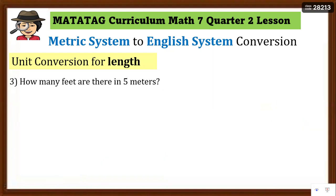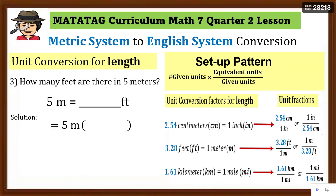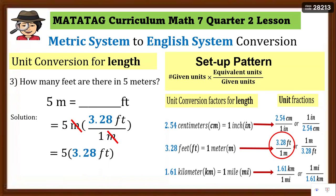Number three: how many feet are there in five meters? Write the equation and set a pattern — since the given unit is meter, i-change mo siya ng feet. Yung meter dapat nasa denominator, yung feet nasa numerator. We have to use 3.28 feet over 1 meter. Cancel the same unit 'meter,' multiply 3.28 feet times 5 — equals 16.4 feet.